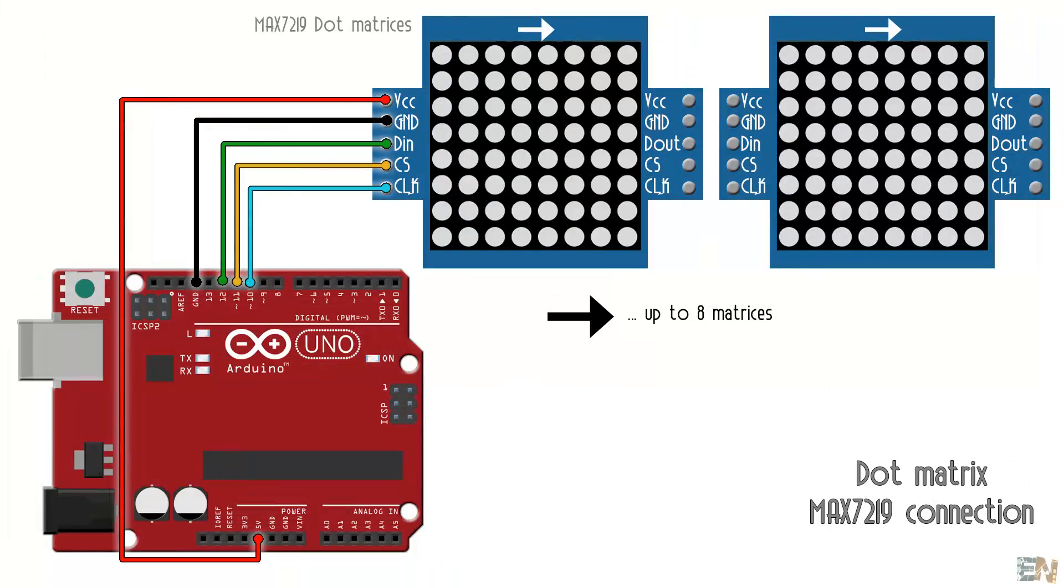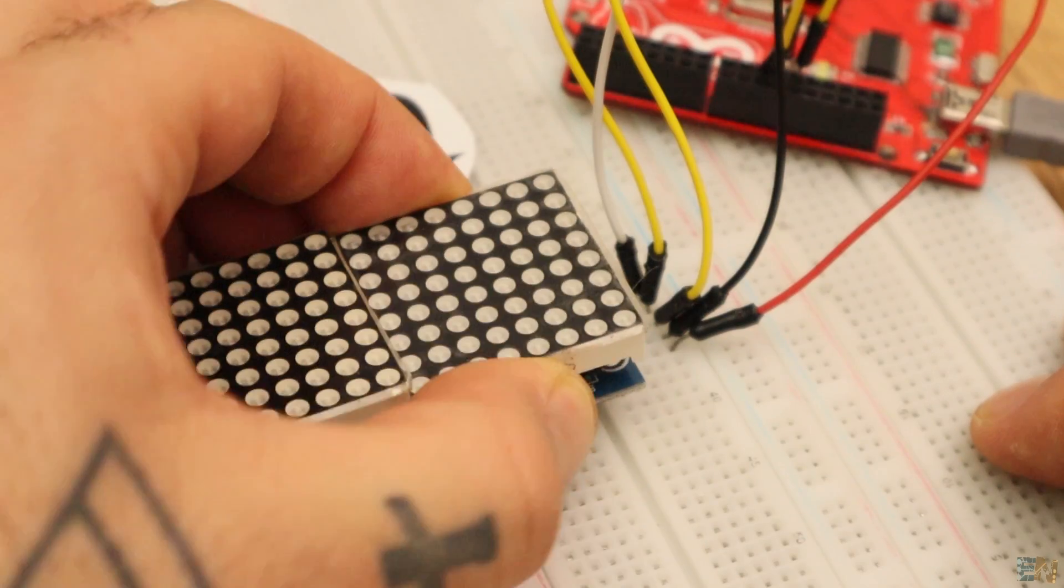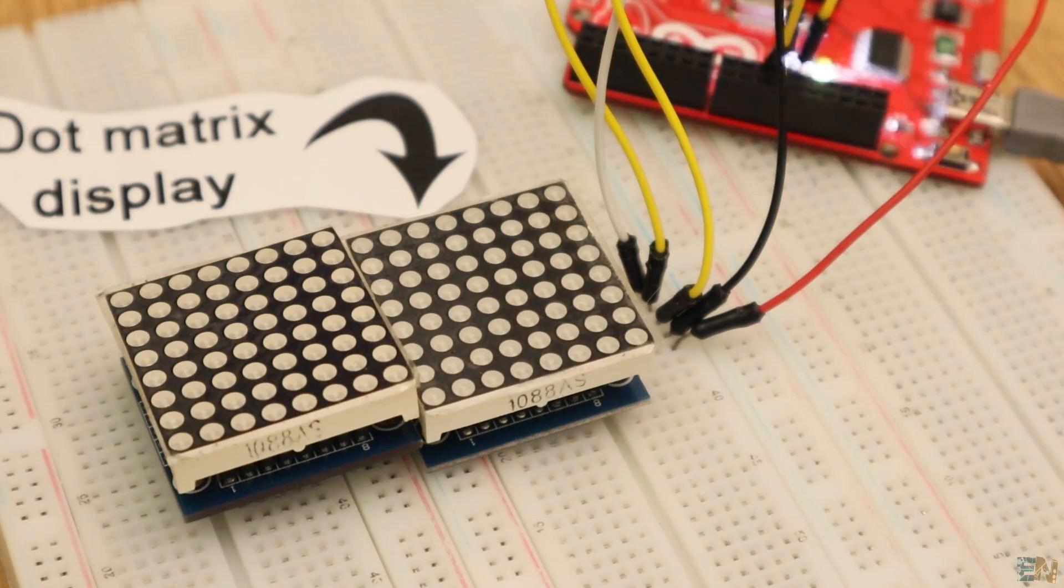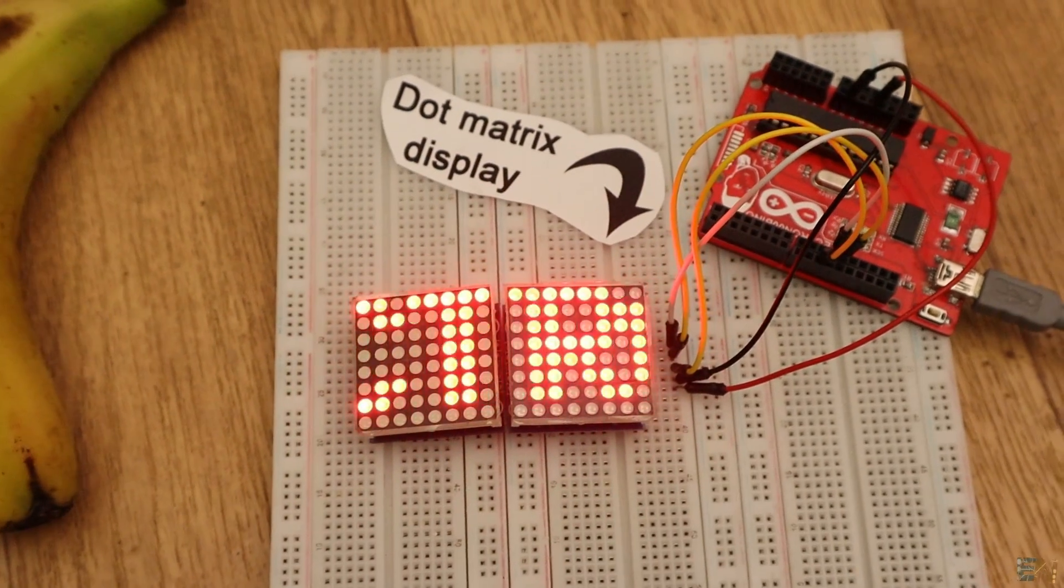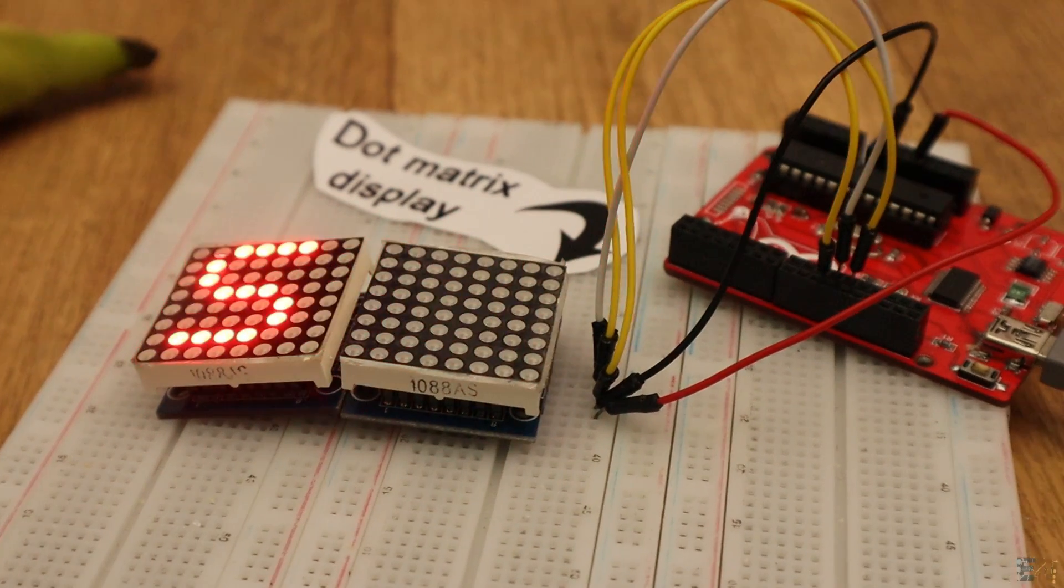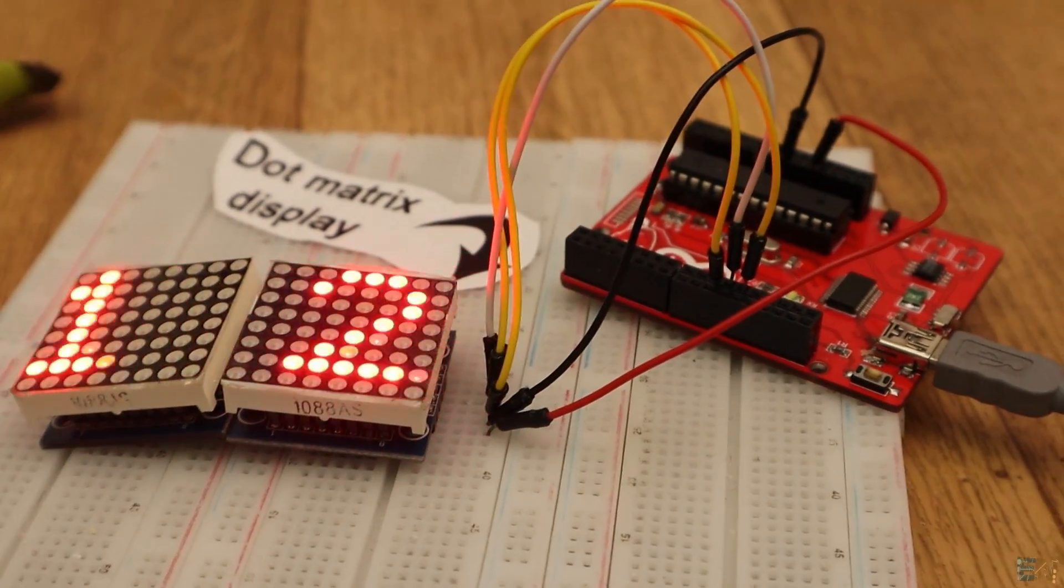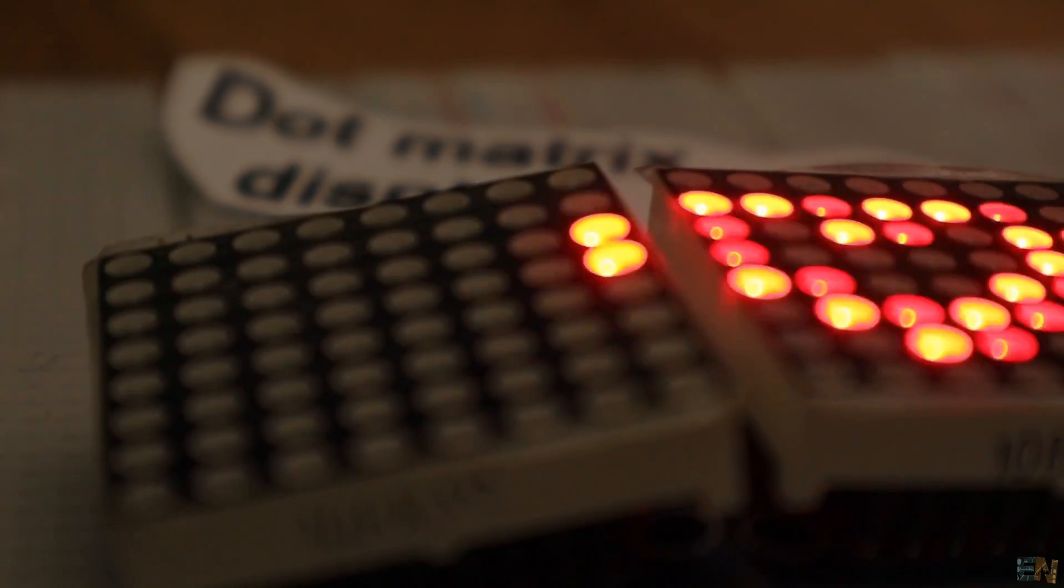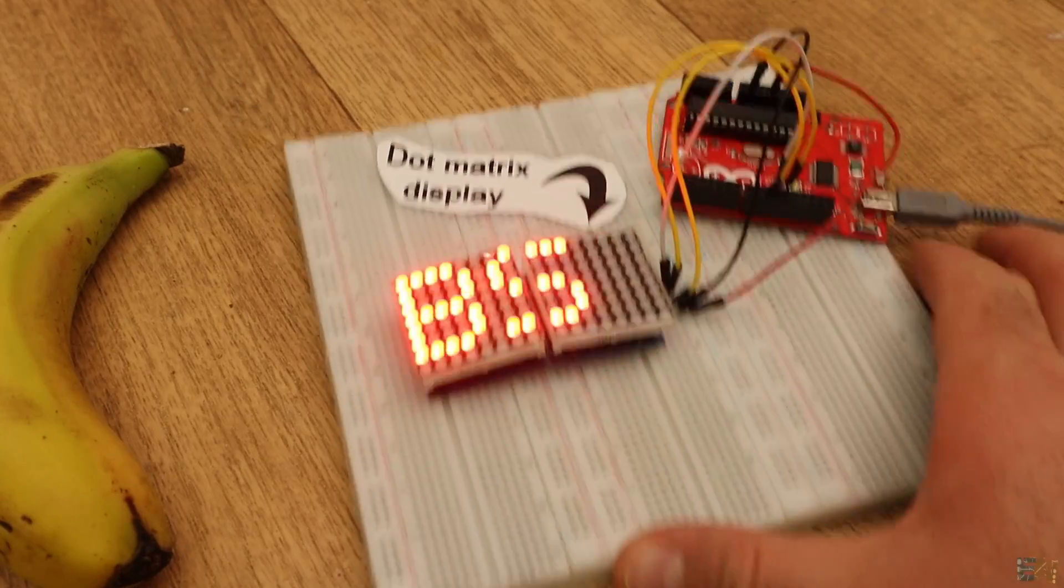Connect the matrices like this to Arduino and download the next code, example dot matrix display. Upload the code and as you can see you could scroll text or numbers and also some unique icons that you could edit. You could control the speed, set it to scroll or static text and merge multiple matrices together. So that's it for this dot matrix display.